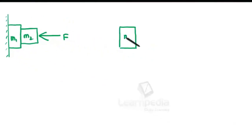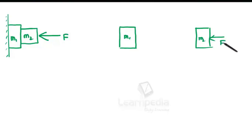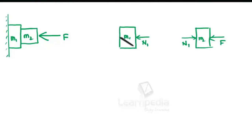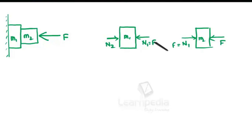Let us draw the free body diagram of m1 and m2 one by one. A horizontal force F is applied on m2. Because of this, there is a contact force between m2 and m1 - let us call it N1. M1 applies a force on the vertical wall, which gives a normal reaction N2. From the figure, N1 equals F, and therefore N2 also equals F.